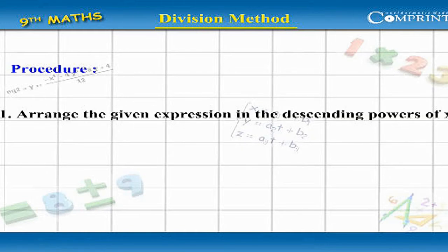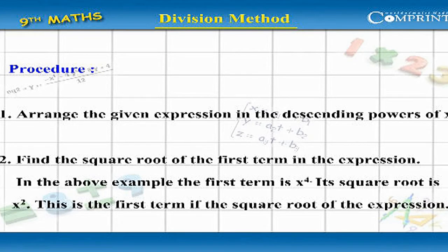Procedure. Step 1: Arrange the given expression in the descending powers of x. Step 2: Find the square root of the first term in the expression. In the above example, the first term is x to the power of 4. Its square root is x squared. This is the first term of the square root of the expression.